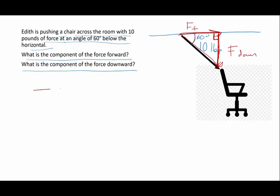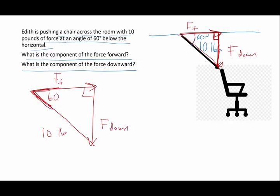So let's redraw this so this is a little bit prettier. 10 pounds, 90 degrees, 60 degrees, force forward, and force down. Now if this is the angle I'm talking about, this is the adjacent side, this is my hypotenuse, and this is my opposite side. So if I want to mess around with adjacent and hypotenuse, that means I'm going to have to use cosine.